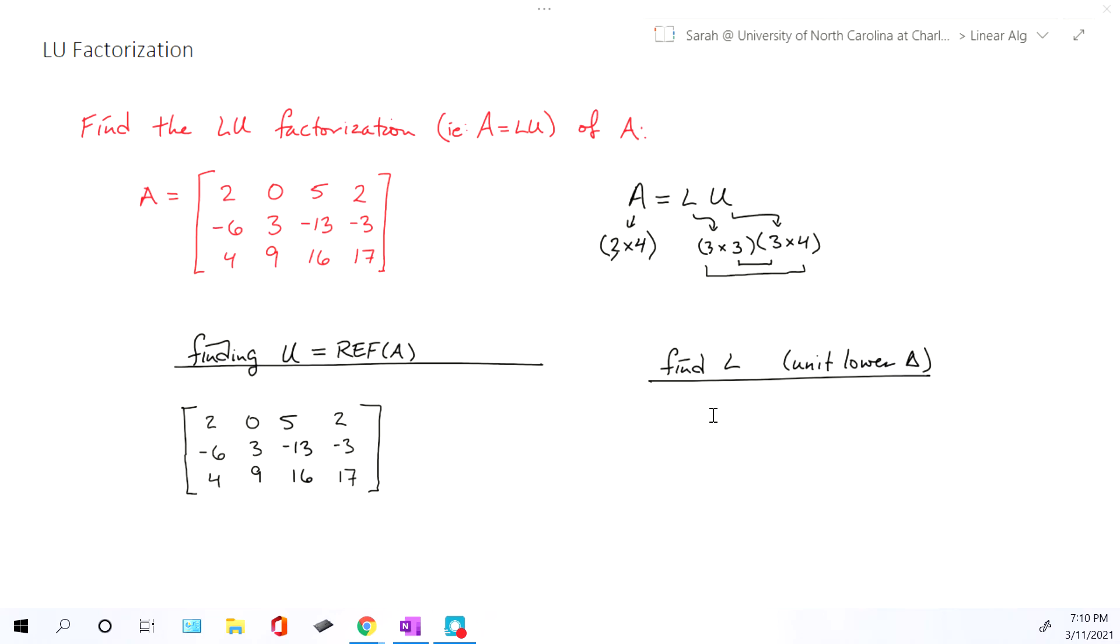Now, what do we know? And I would always recommend setting up the matrix L first. We know L is 3 by 3. We also know it's a unit lower triangular matrix. So the unit part means that on the diagonal of this 3 by 3 matrix, we're going to have all 1s. Lower triangular means above the diagonal, we're guaranteed to have all 0s. So with no work whatsoever, you know for sure L is going to have those 6 entries in it.